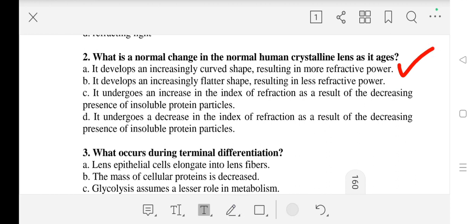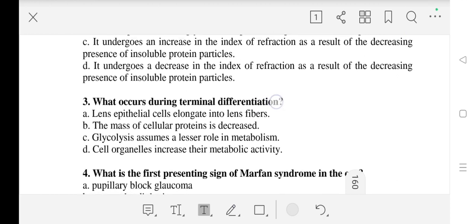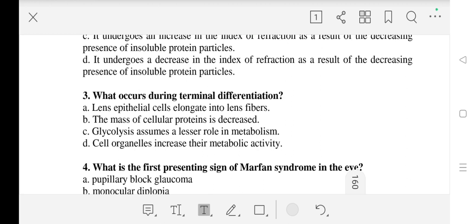Question number 3: What occurs during terminal differentiation? Answer is A - lens epithelial cells elongate into lens fibers.